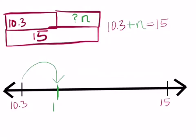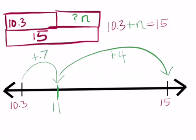Let's hop to get the next whole number landing point. If I want to get to my next whole number, that's 11. So, that's a hop of 7 tenths. Now, to get from 11 to 15, that's a hop of 4.